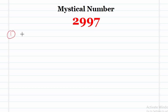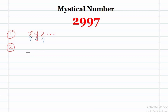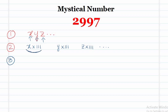Here are the steps. Step one: take any number, like XYZ... — it can be single digit, two digit, three digit, four digit, five digit, any number of digits. Step two: multiply each of the digits of this number by 111. So the digits are X, Y, Z and others, so we multiply X by 111, Y by 111, Z by 111, and so on. Step three: add all these terms together.